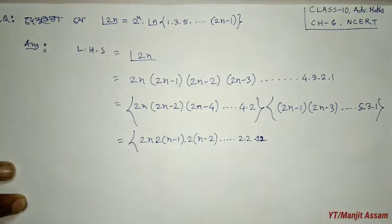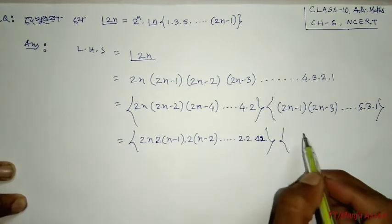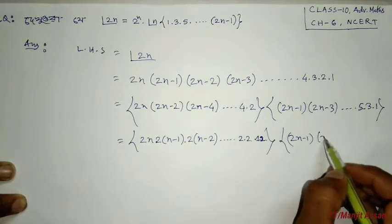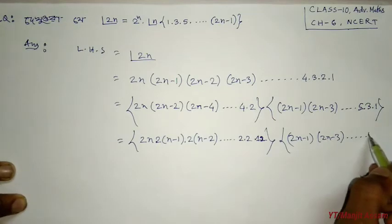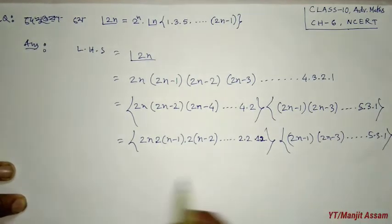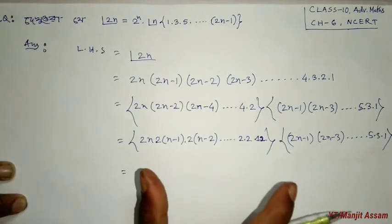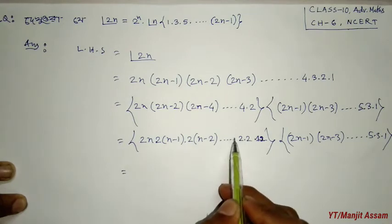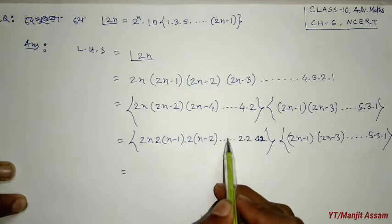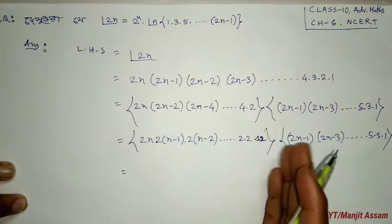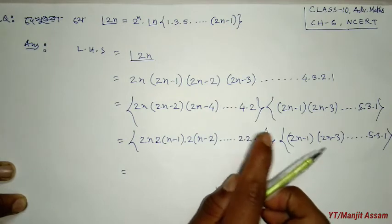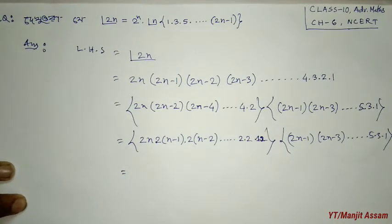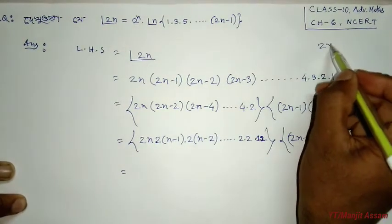Writing the odd terms explicitly: 1 into 3 into 5 into dot dot dot into (2n minus 1). So we have 2^n into n! multiplied by 1 into 3 into 5 dot dot dot into (2n minus 1).